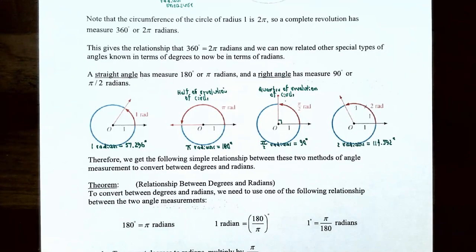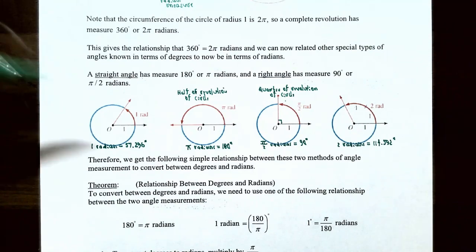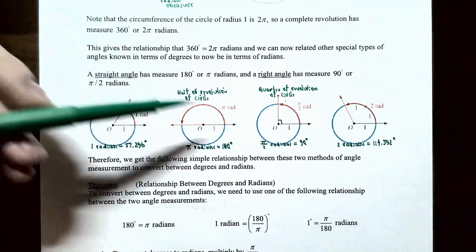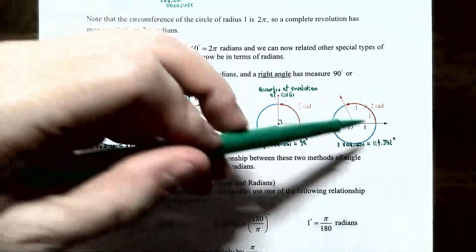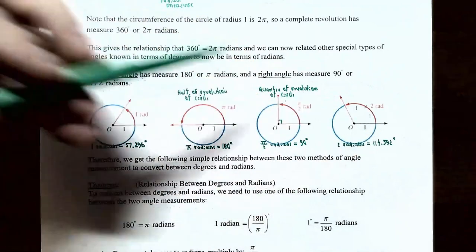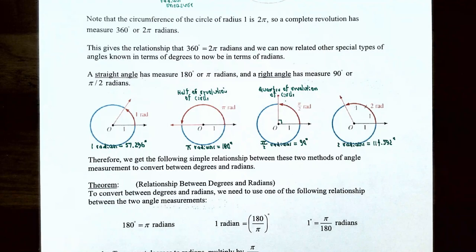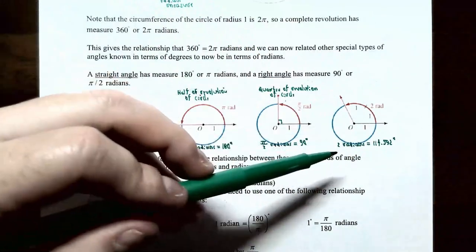A straight angle has a measurement of 180 degrees, or equivalently pi radians. A right angle has 90 degrees, which converts to pi divided by 2 radians. One radian is about 57.296 degrees — if you have a radius-1 circle and trace a distance of 1 along it, that angle is 1 radian. A half turn is pi radians or 180 degrees; a quarter turn is 90 degrees or pi over 2 radians; and 2 radians is about 114.592 degrees.